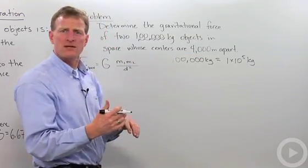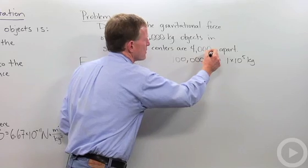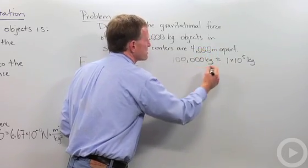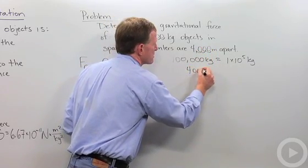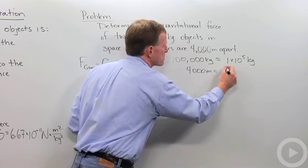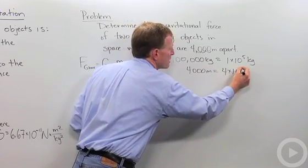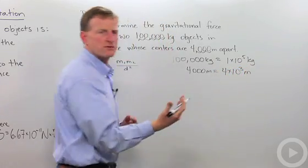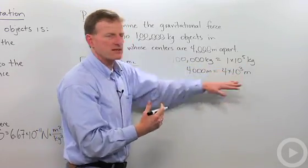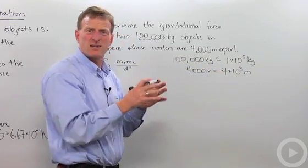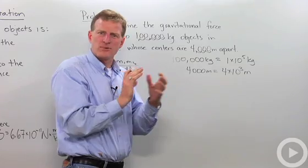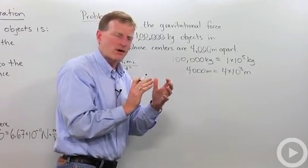Over here with 4,000 meters, again I can go 1, 2, 3 and say that 4,000 meters equals 4 times 10 to the 3rd meters. Now I've converted everything to scientific notation. It's going to make it a little easier to get all these big numbers into this equation.